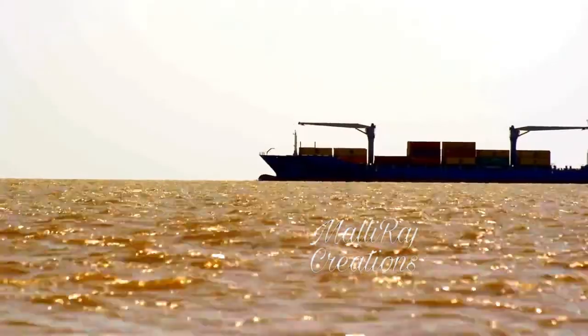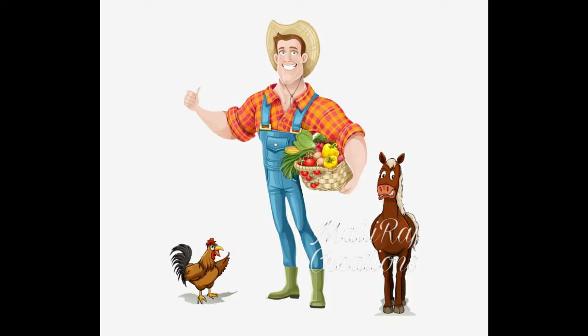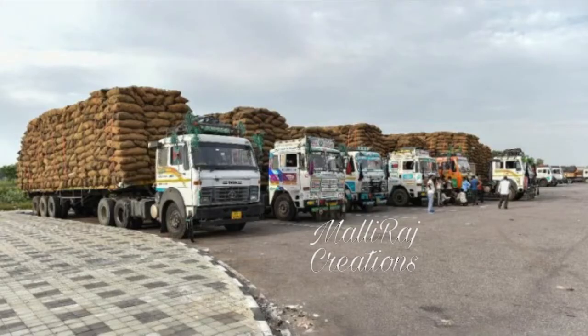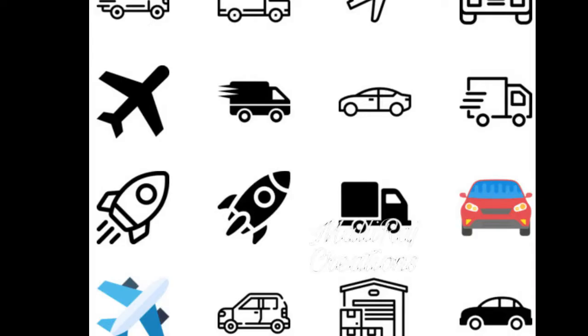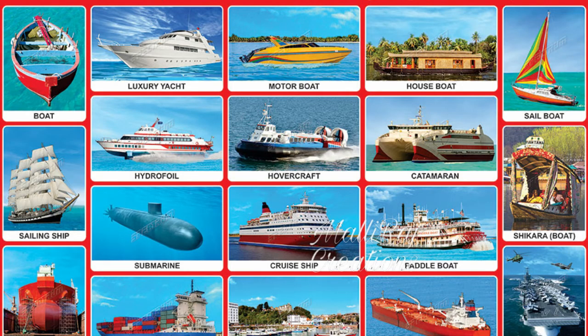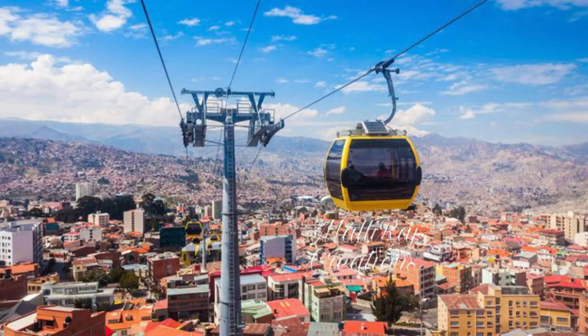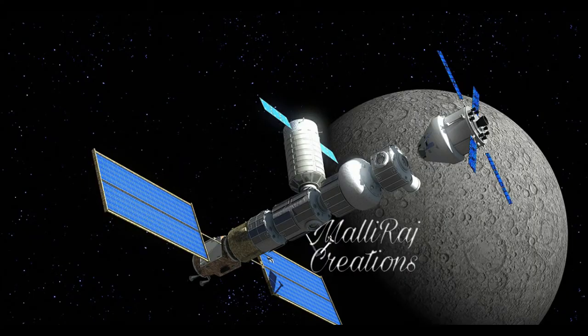So let us learn more clearly about transport. First, what is transport? Transport is the movement of humans, animals, and goods from one place to another. There are four main modes of transport: road transport, rail transport, air transport, and water transport. A few other modes are cable transport, pipeline, and space transport.